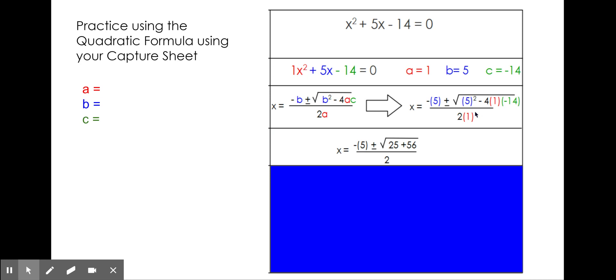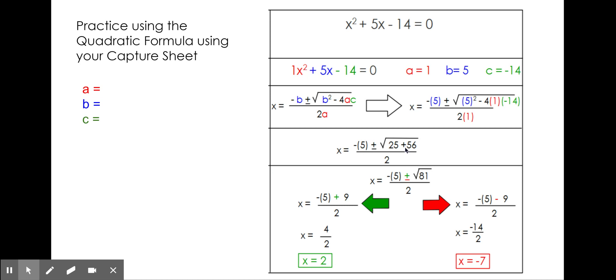Your formula should now look like this. Please note that when you're subtracting 4 times 1 times negative 14, you actually have a negative times a negative, hence plus 56. The simplification of that, 25 plus 56 is 81.